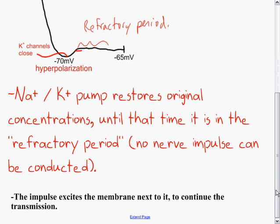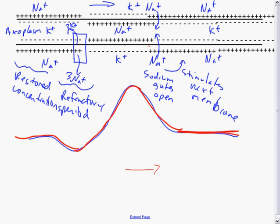This impulse will excite the membrane next to it and continue the transmission. How is the nerve impulse then conducted down the membrane? If we think of this as a long membrane made of multiple sections, we can see in this section the sodium channels have opened and are probably about to close. The charges are reversed so the inside is positive and the outside is negative. This depolarization causes the section next to the membrane to undergo depolarization.